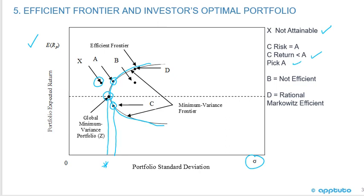But A has a higher return than C, and C has a lower return than A. So you would obviously want to choose A because, for that level of risk, an investor wants to get the highest return. B is not efficient because at that level of risk you can get a higher return on the efficient frontier — in this case, point D. That's the rational investor, and we call that Markowitz efficient.